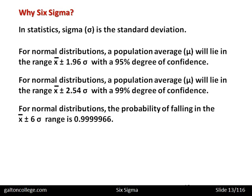For normal distributions, the probability of falling in the range x-bar plus or minus 6 sigma is 0.99999966. So we have a very wide range — the sample average x-bar plus or minus 6 times the standard deviation. That's a very wide range for the population average to fall in. Therefore, because it's a wide range, we're more confident it will fall in there. We have a bigger catchment area, if you like.